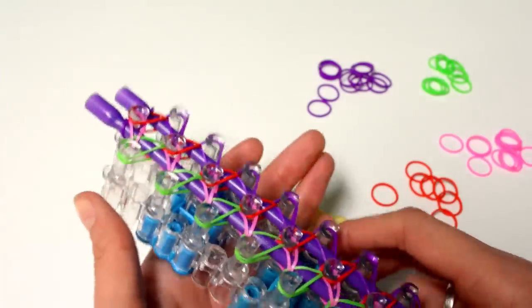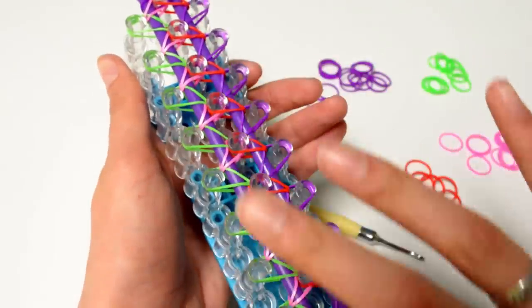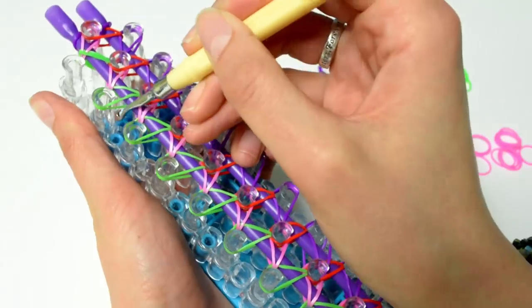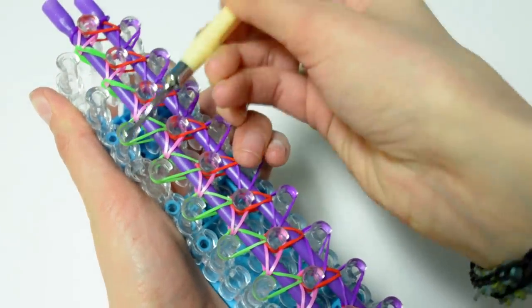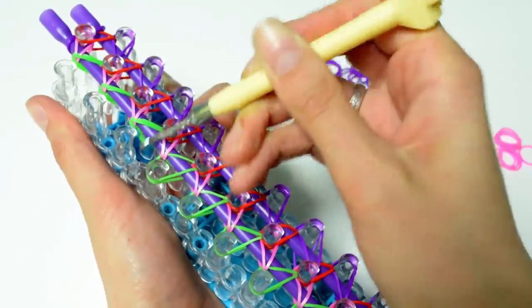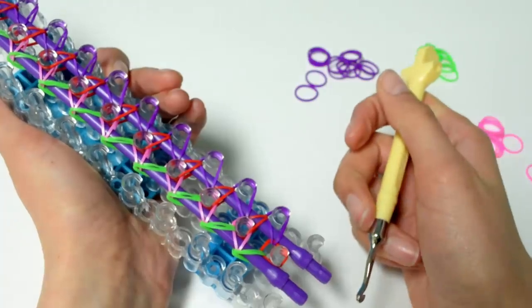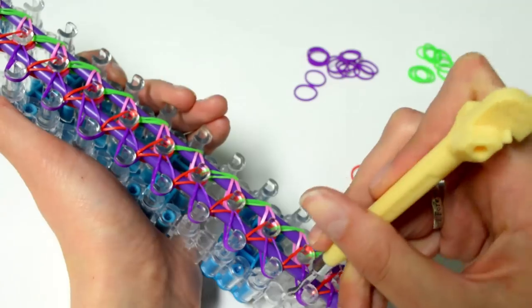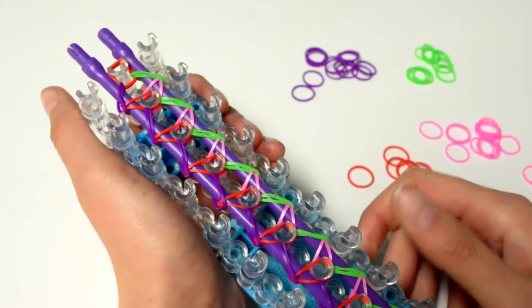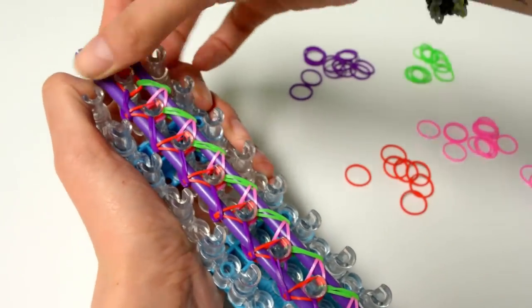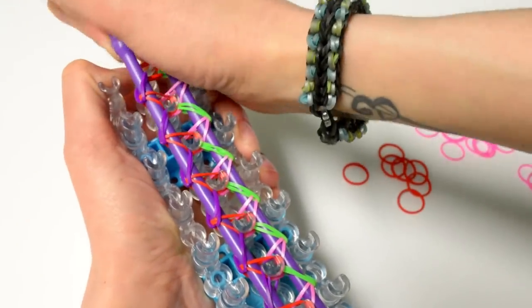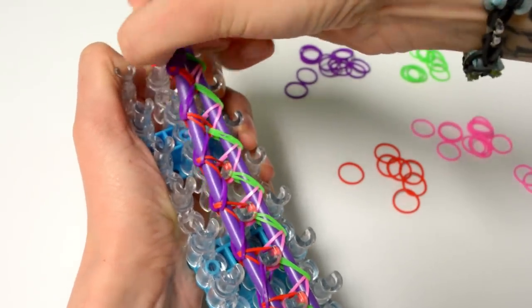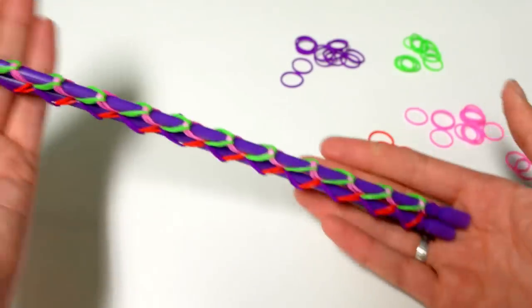Now we're going to remove the bands from the left side of the loom. So just hook it and release it. Now we're going to do the same thing on the other side. So just hook your bands and release them. Now you want to wiggle your extension rods from side to side to remove the bands from the center bars. Now the end result should look like this.